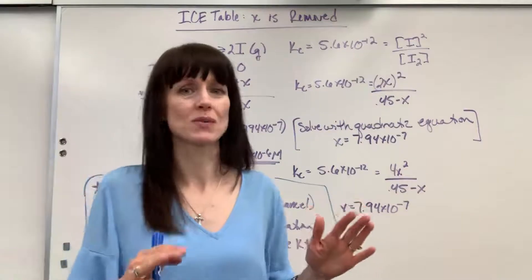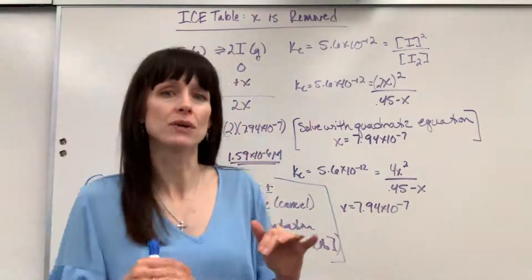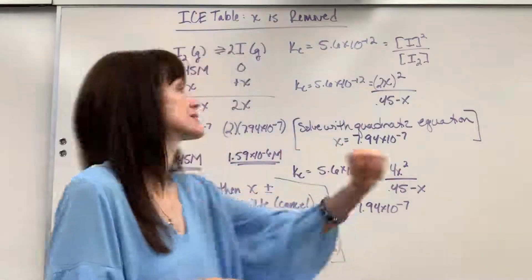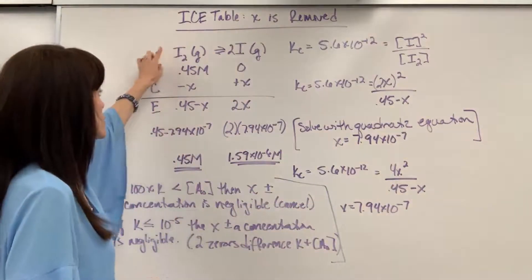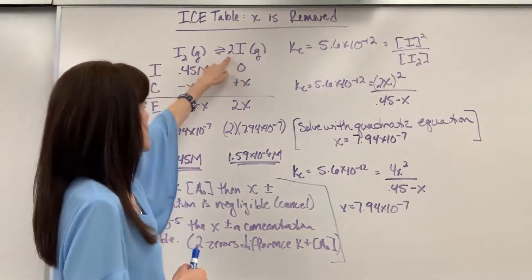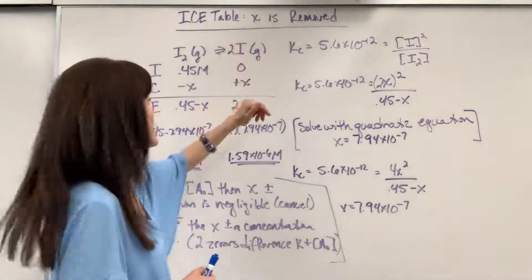So let's start with our example, this is the best way to teach this to you, and I'll end with your takeaway when you will be able to cancel out the x. Okay, so here's our equation, we have one mole of iodine gas I2 is going to produce two moles of 2I of the iodine gas.